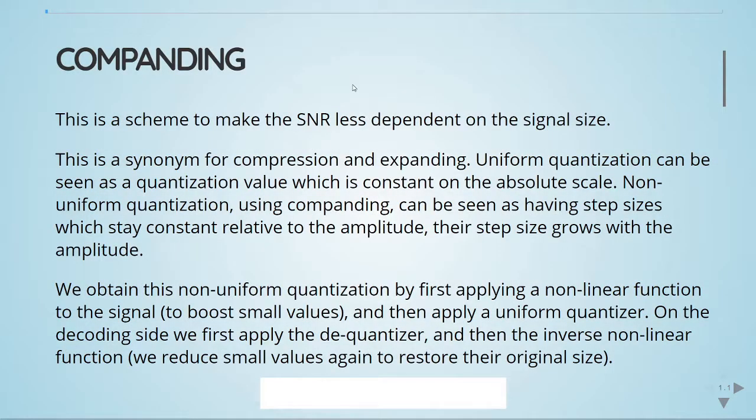Previously, we've seen that the signal-to-noise ratio depends not only on the signal type, but also on the signal size. Companding is a scheme to make the signal-to-noise ratio less dependent on the signal size.